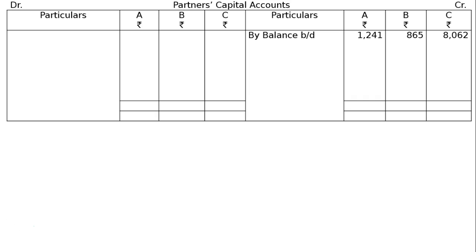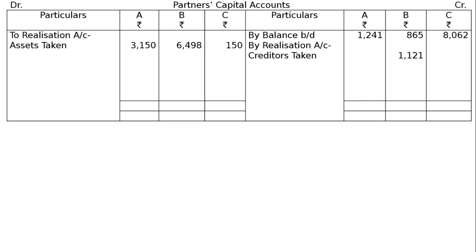By balance brought down: A Rs. 1241, B Rs. 865, C Rs. 8062. By Realization Account — creditors taken: B took over the creditors at Rs. 1121. On the asset side, to Realization Account — Assets Taken by A: Rs. 3150. B took over other assets and A took over the building; C took over the shares in X Limited. Values are: A Rs. 3150, B Rs. 6498, C Rs. 150.